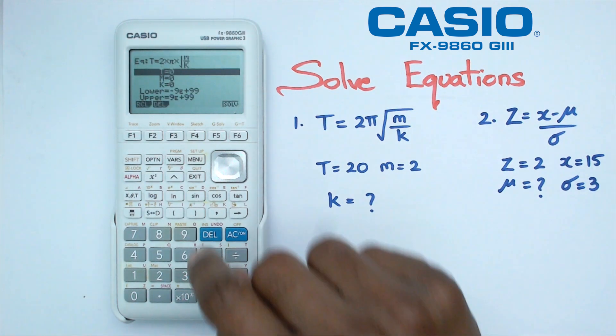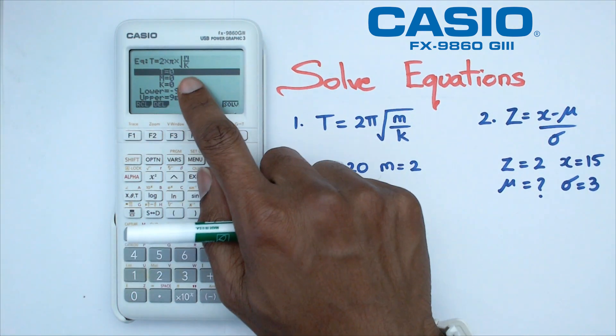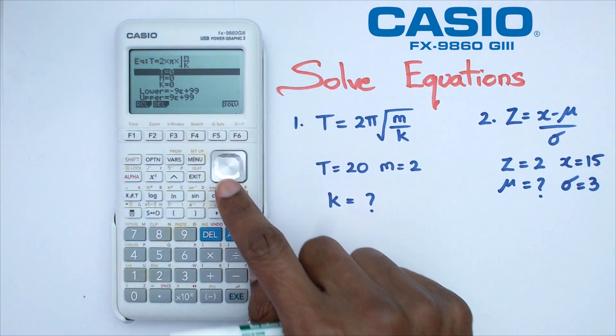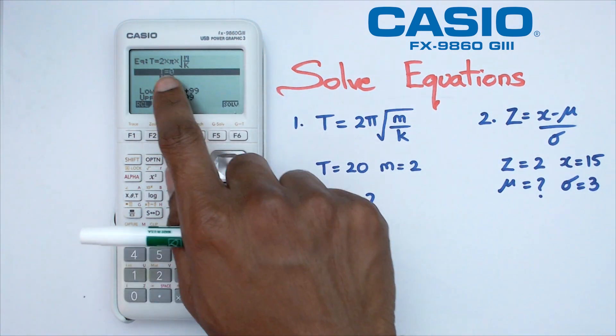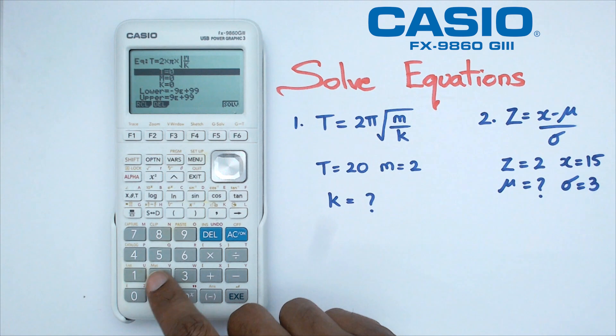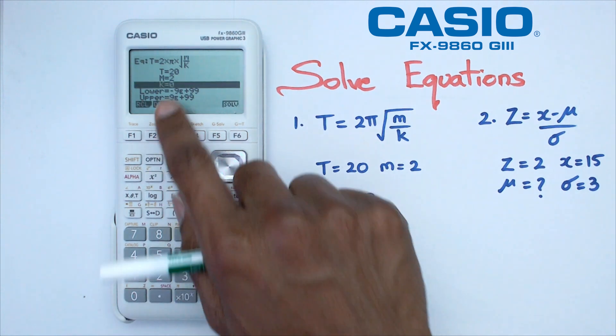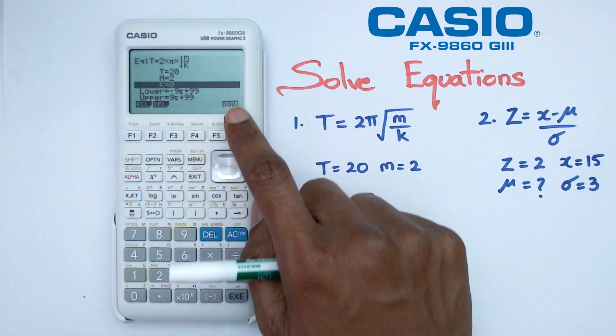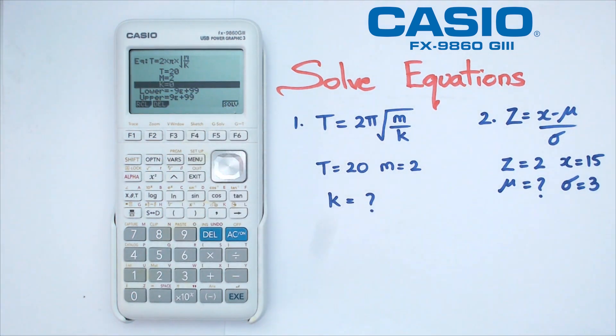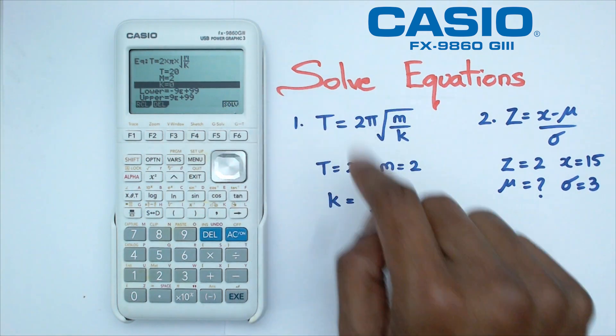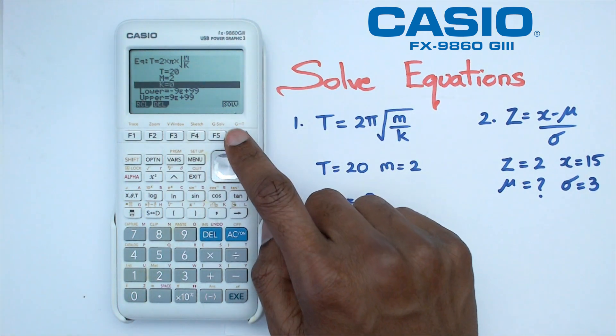I'm going to put this equation in, and right now you've got t equals 0, m equals 0, and k equals 0. I'm going to first substitute t. t is equal to 20, so I'm going to put down t equals 20, m is equal to 2, and I'm going to put down m equals 2. Finally, when I get down to k, I can actually press the solve button, and it should actually solve this entire equation for me.